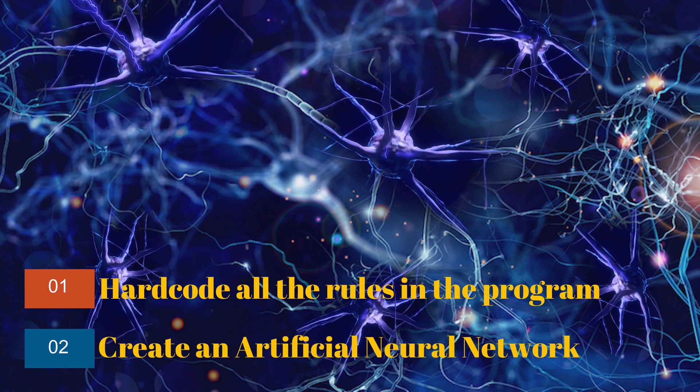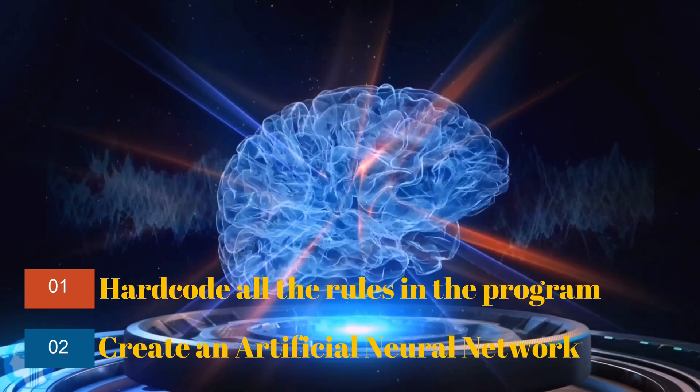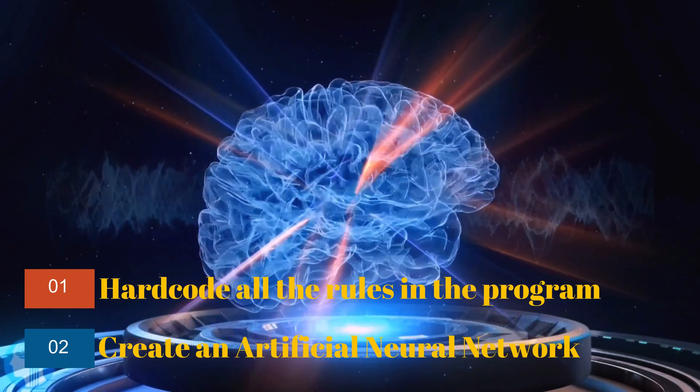Another option is a neural network, where we create a facility for the program to be able to understand what is needed. You may create this neural network where we provide inputs, tell the neural network what you want as output, and then let it figure out everything on its own. These are two fundamentally different approaches, and our goal is to create a neural network that learns on its own.